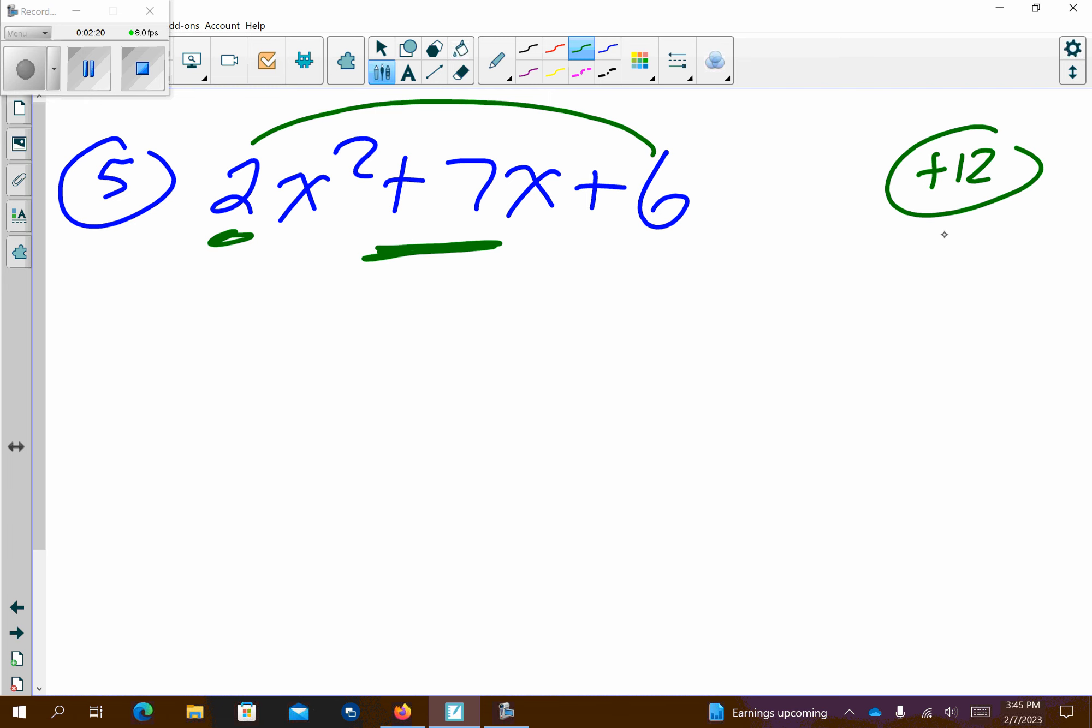So I'm looking there. That's positive, so both are going to be positive. So I know that 12 is 1 times 12, 2 times 6, and 3 times 4. Okay, so if I add these together, I'm going to get 13. If I add these together, I'm going to get 8. If I add these together, I'm going to get 7.